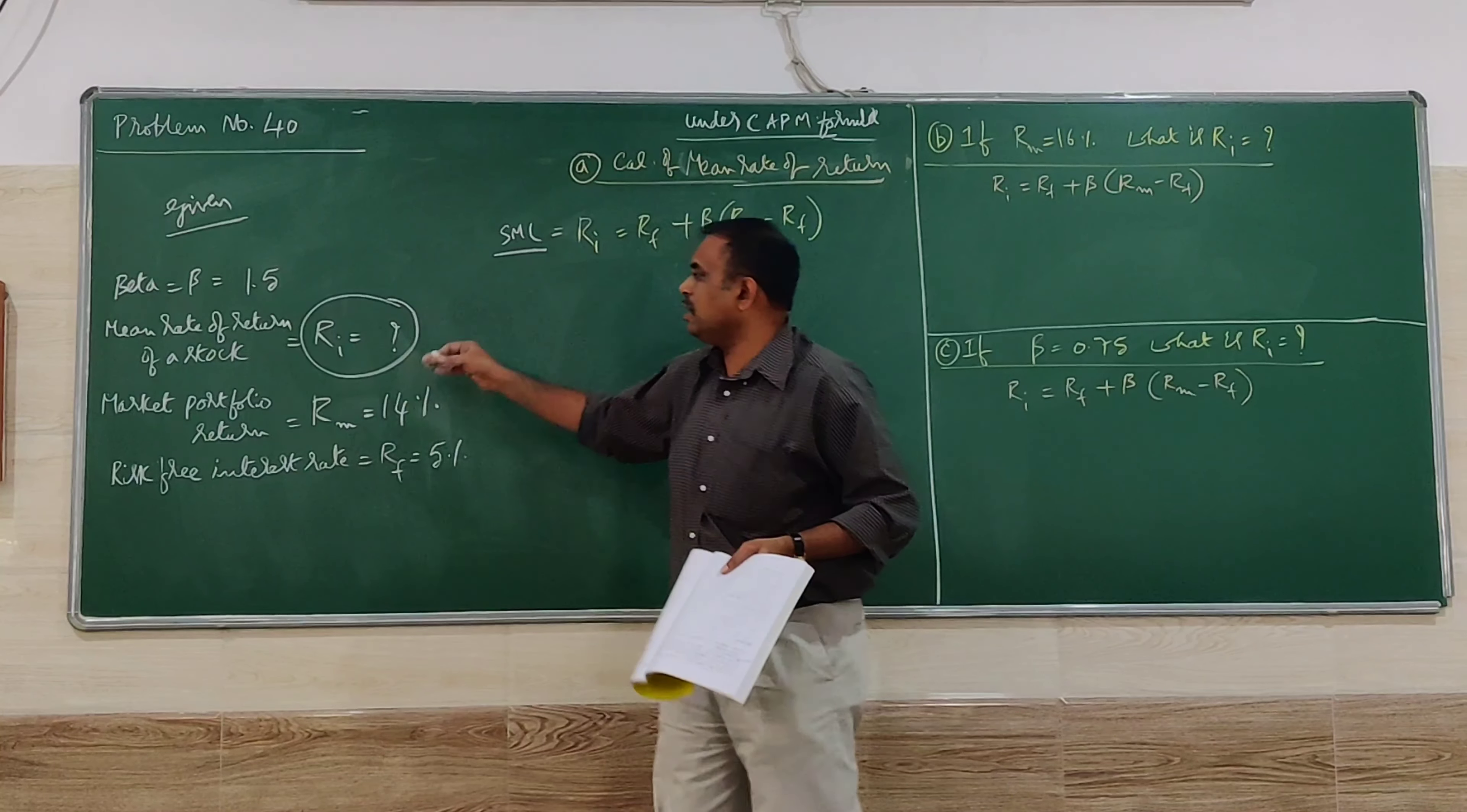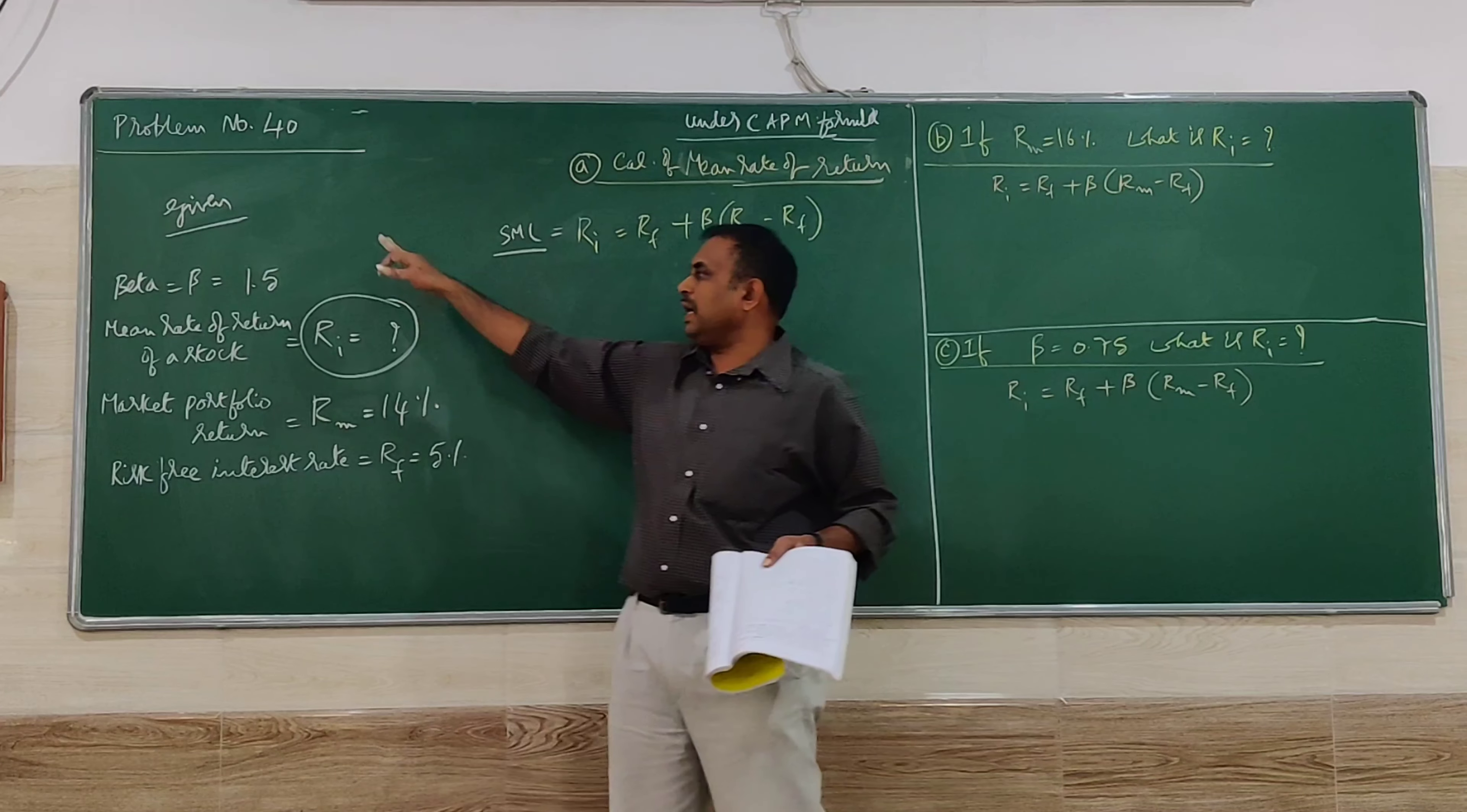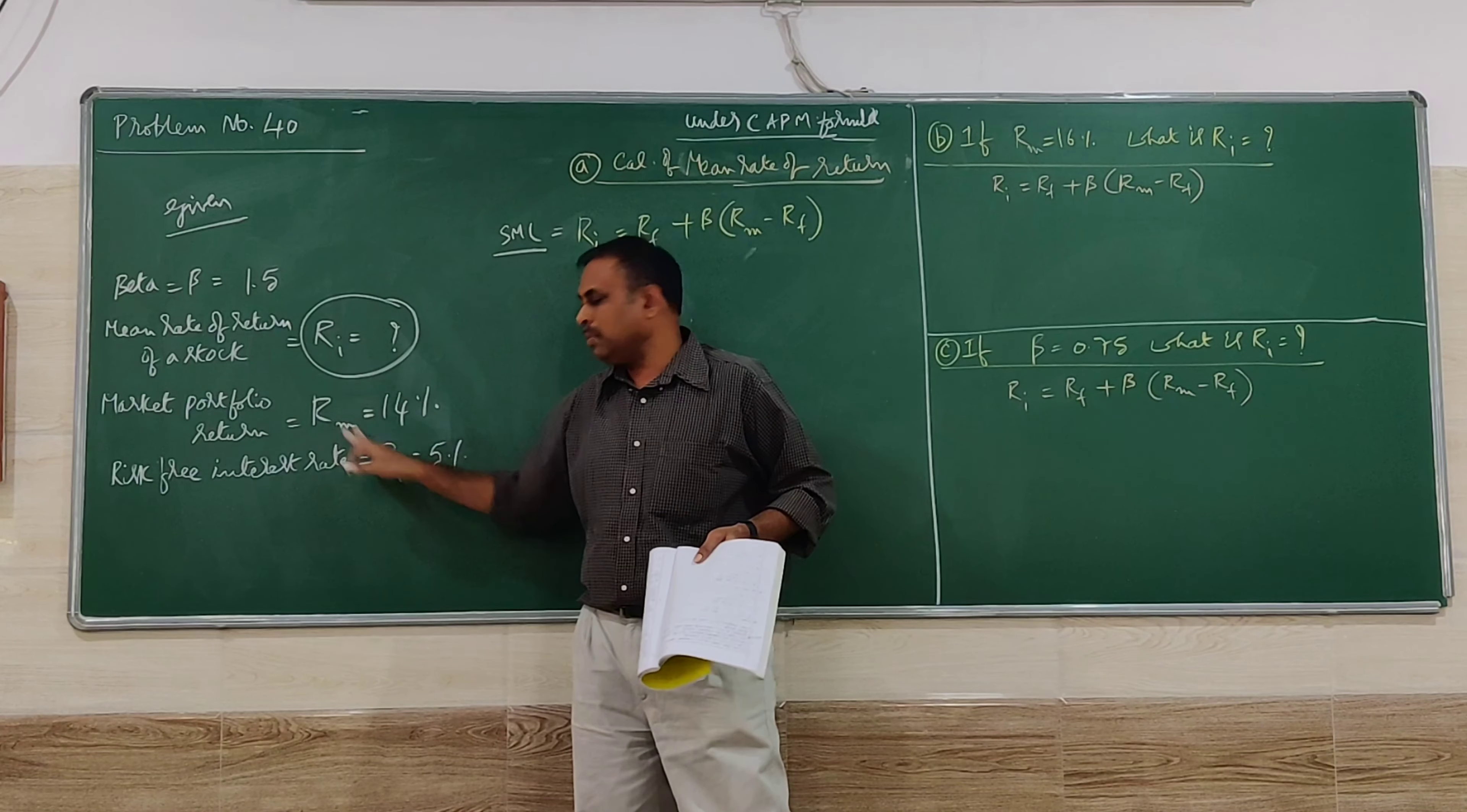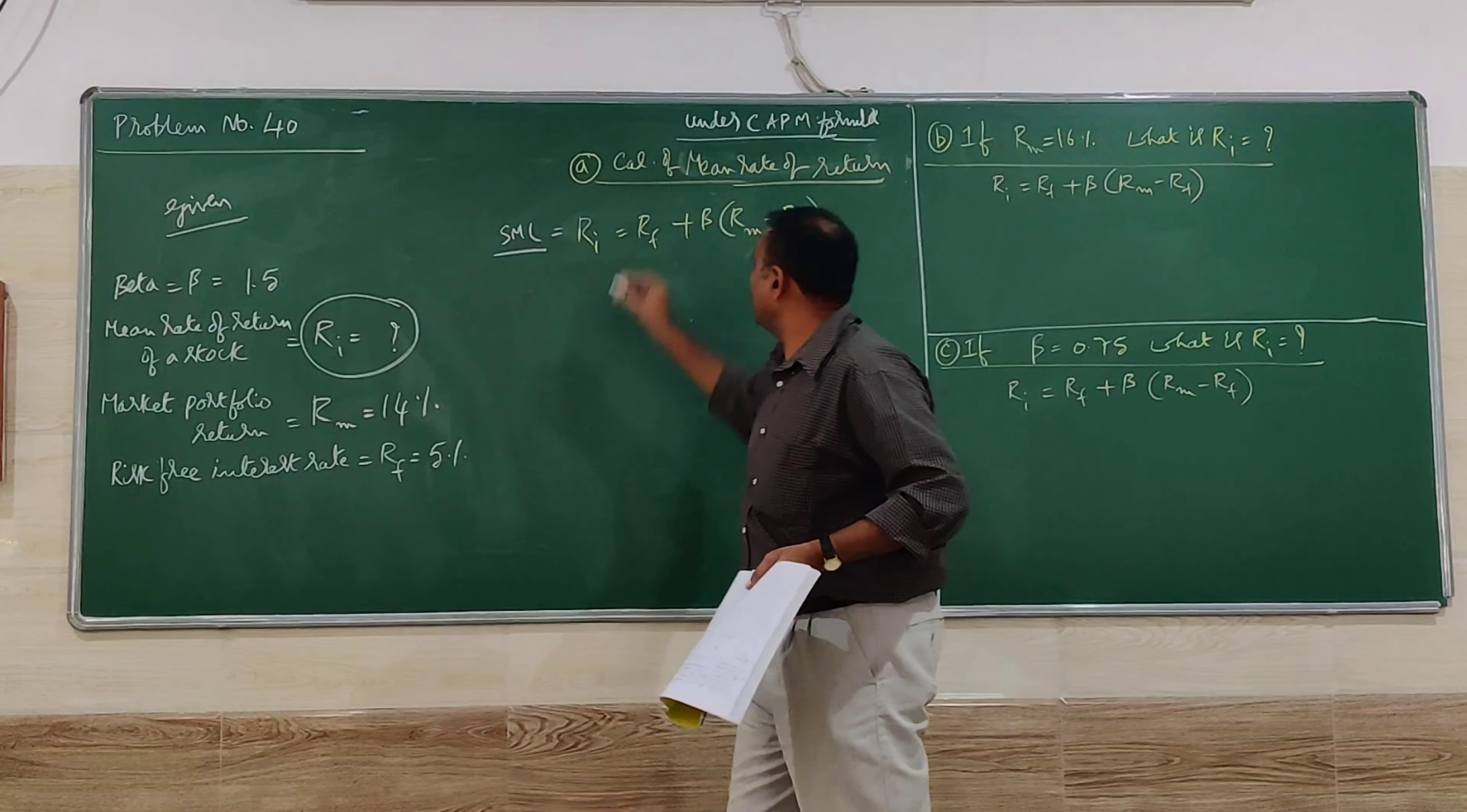We are finding the mean rate of return for the particular stock, RI. We have beta, RM, and RF, so let me substitute for the first one to calculate mean rate of return.